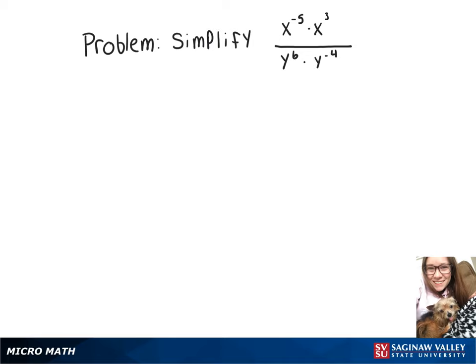To simplify this expression, we'll start by adding our exponents together. So on top, we'll have x to the negative 5 plus 3, and on the bottom, we have y to the 6 plus negative 4.